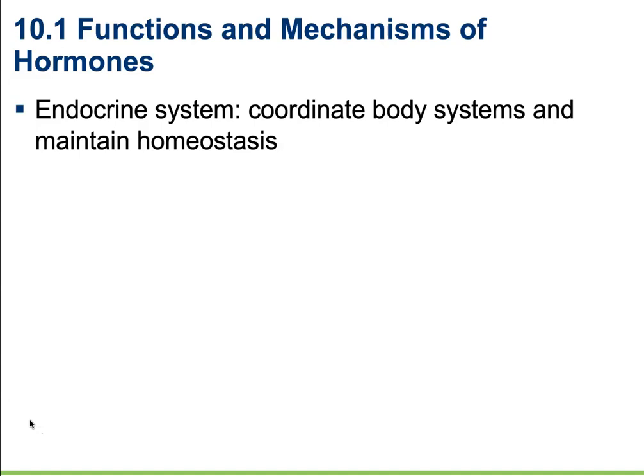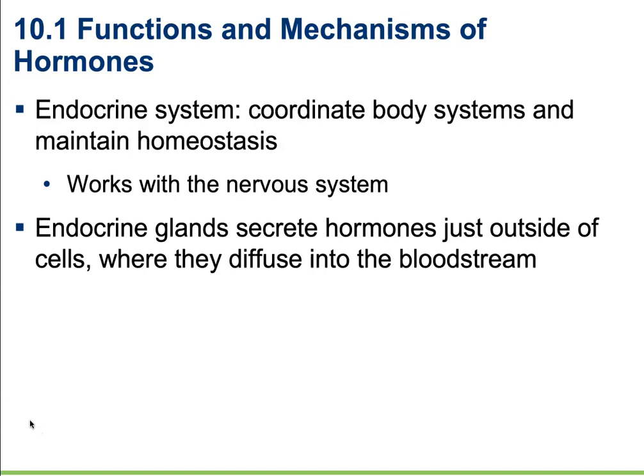The main function of the endocrine system is to coordinate body systems and maintain homeostasis. The endocrine system works with the nervous system. It is a more leisurely system of communication than the nervous system, so it's less instantaneous but produces more long-term alterations and effects. The endocrine glands contain secretory cells that release their hormones into intracellular fluid, where they then diffuse into the bloodstream and travel to wherever they need to go.